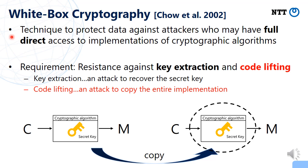There are two major requirements in white-box cryptography: resistance against key extraction, and resistance against code lifting. Key extraction is an attack to recover the secret key, and code lifting is an attack to copy the entire implementation.